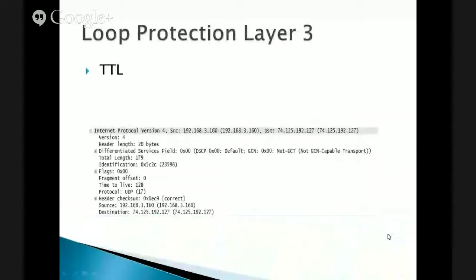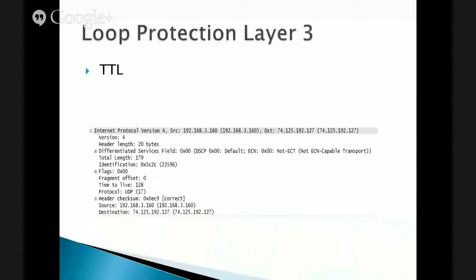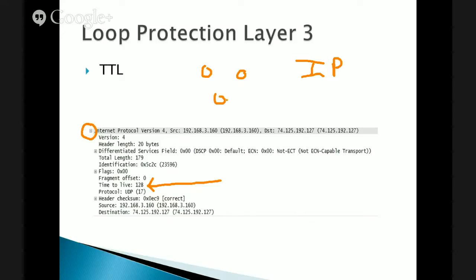So, Layer 2 loop protection. First off, let's talk about Layer 3. When we're talking about Layer 3, we're talking about IP — we're talking about a packet. In the IP header, there's this TTL value. Every time a packet passes through a router, this TTL value goes down by one. So at Layer 3, if your packet was caught in a routing loop or bouncing around between three routers, eventually TTL would make its way down to zero and that packet would be dropped. So at Layer 3, we have loop protection — it's built right into the IP header.